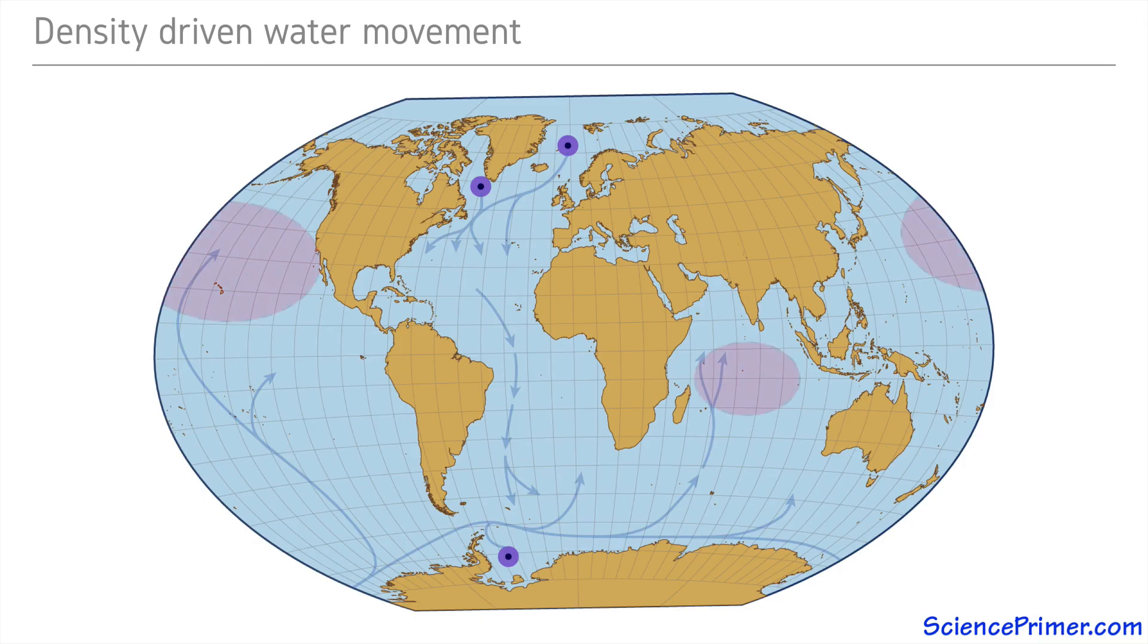Once at the surface, this water warms and slowly completes the cycle returning from the Indian and Pacific Oceans through the Southern Ocean into the Atlantic and back to the places where deep water is formed.